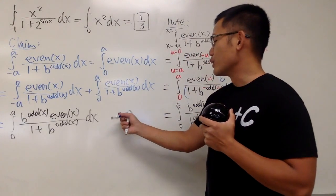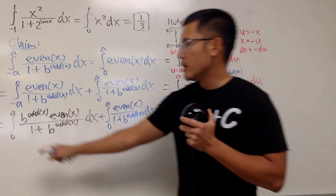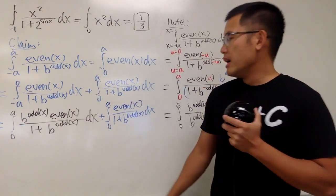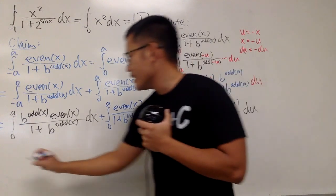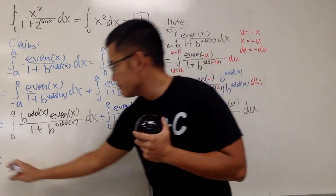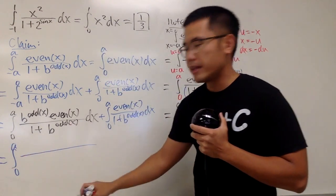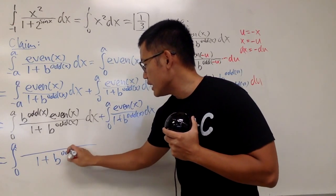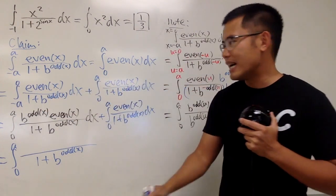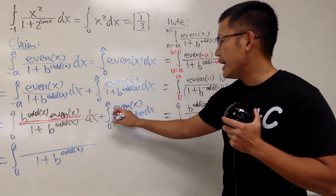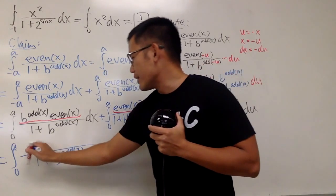Anyway, right here, of course, we can put it down. And now, here is the beauty. Because both integrals are going from 0 to a, of course, we can put them together, and they have the same exact denominator, so you can just add up the top, and you will see the following. Here we go. This is equal to integral going from 0 to a, and let me just put the denominators together, which is 1 plus b to the odd function. And we, of course, just need to add this and that together, but the beauty is that, you see, we have this times the even function, and this is just the even function by itself. We can factor out that even function, isn't it? I'm just going to factor that out right here, even of x.